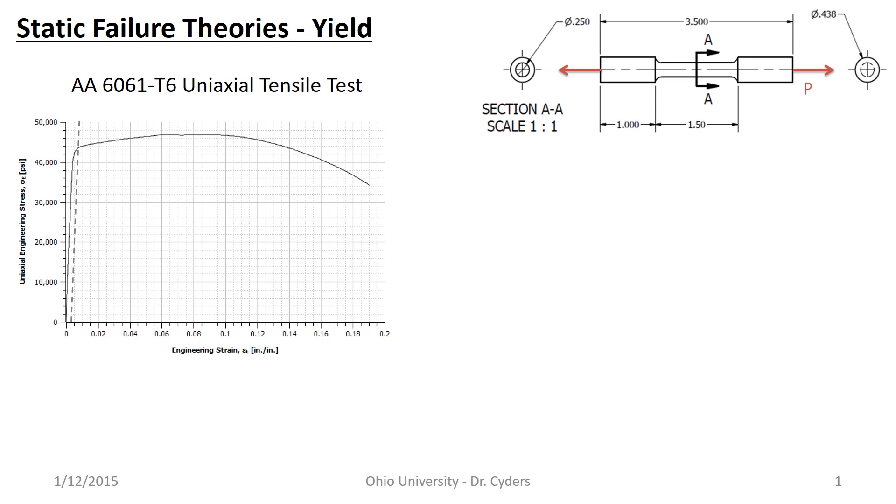Up until now, we've described generally pretty simplistic states of stress on their own when we talk about whether a part is in yielding. So the question becomes, how do we determine whether yielding is occurring when I don't have just a single number to compare things to?